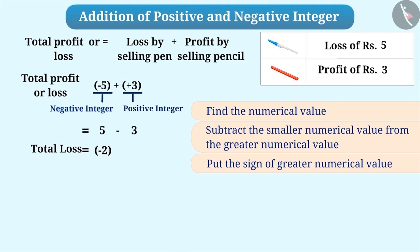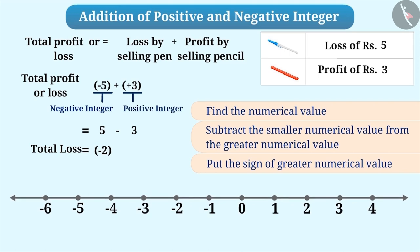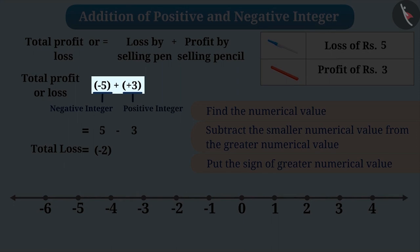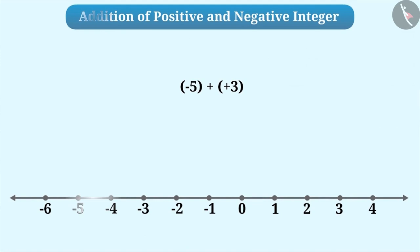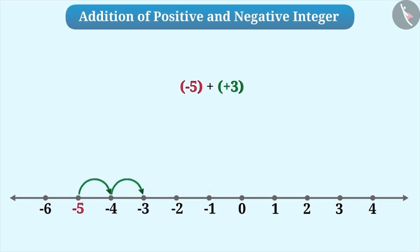The addition of a negative integer and a positive integer can also be represented on the number line. Let's understand it with the example of -5 + +3. First, draw a number line of integers. Here, -5 is the first integer which is a negative number. Therefore, we move 5 places to the left of 0. By doing so, we reach -5. Now the second integer is +3. Since it is a positive integer, we move 3 places to the right of -5. Thus, we reach -2, which is the result of -5 + +3.